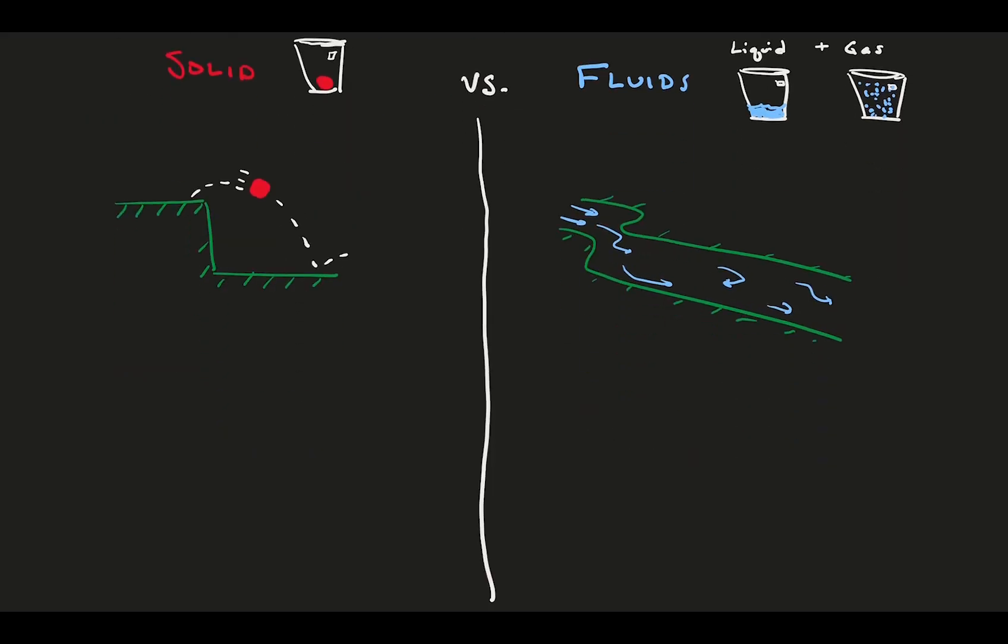Let's compare how a solid projectile and a fluid flow might be different. Generally, solids have a clear object that can be followed. In this case, it's a bouncing ball. In fluids, there is no one clear object that we can follow. It's made up of a continuous blob of stuff, but that stuff might be doing different things at any given time or place.